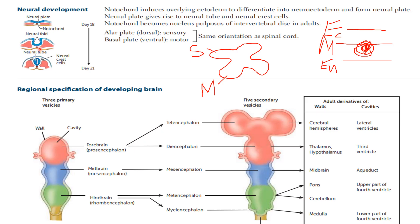Let's review the germ layer derivatives again. The ectoderm is going to give the skin. The mesoderm is going to give the muscle. The endoderm is going to give the GIT and the lungs.